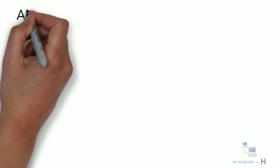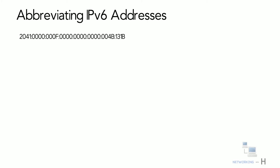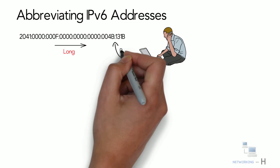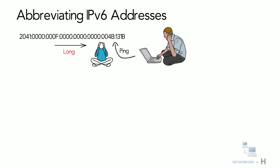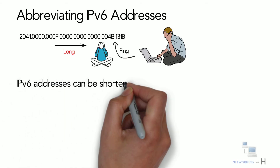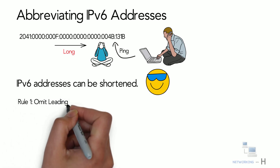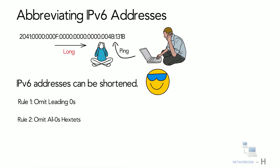Next, let's see how we can abbreviate IPv6 addresses. IPv6 addresses are quite long — imagine having to ask a friend to ping a full address. To make our lives a bit better, IPv6 addresses can be shortened by following three rules. Rule 1: omit leading zeros. Rule 2: omit all-zero hexadecimal groups. Rule 3: four consecutive zeros can be replaced by a single zero.